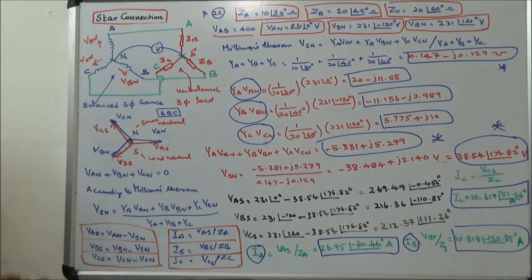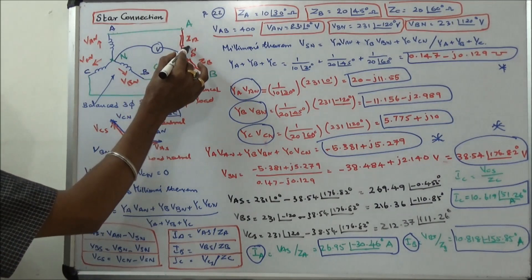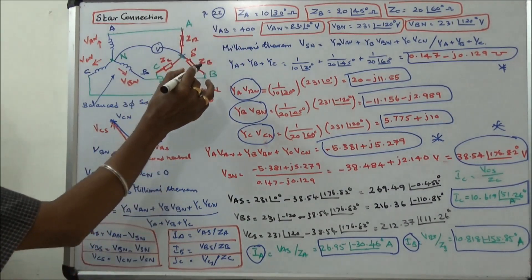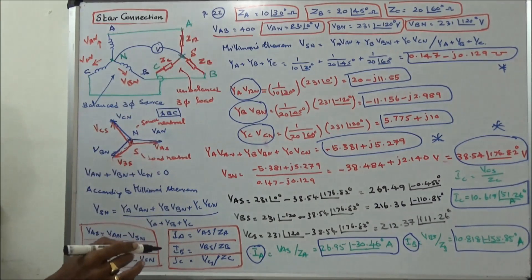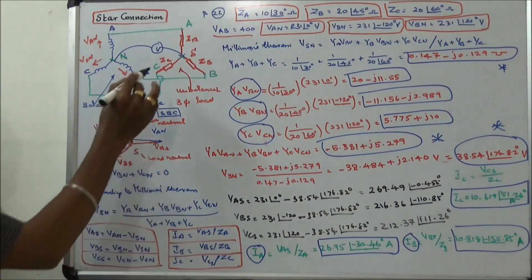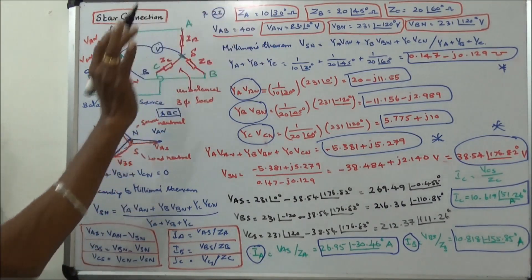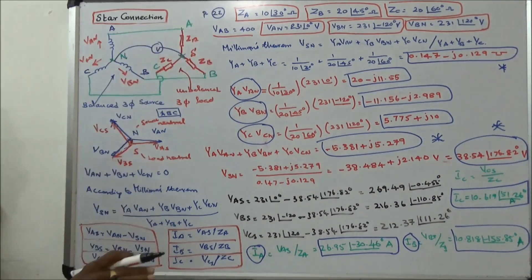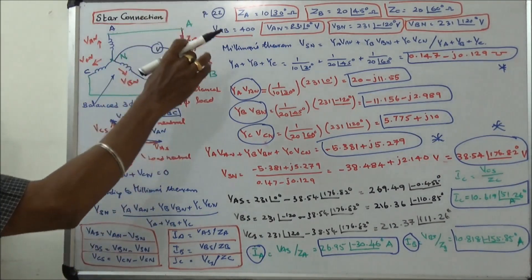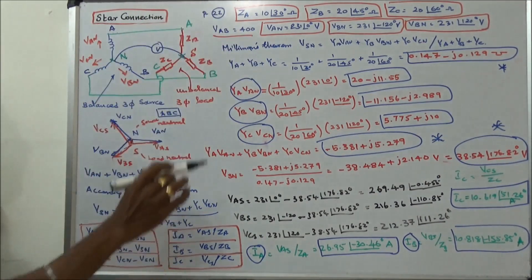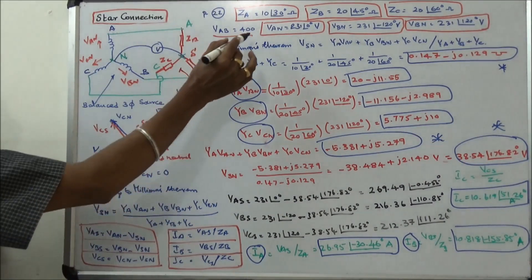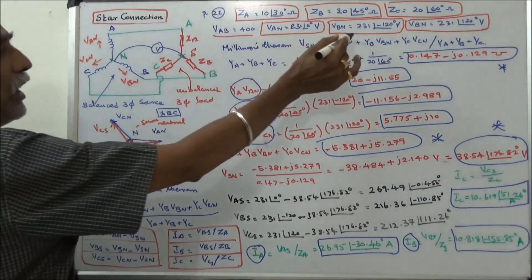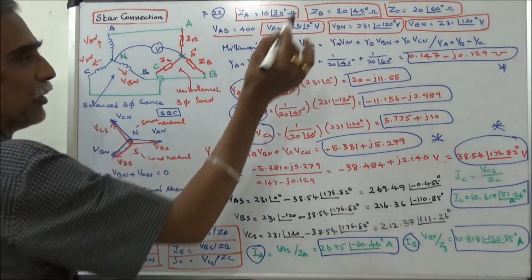Working out a numerical problem: ZA equals 10 angle 30 degrees, ZB equals 20 angle 45 degrees, ZC equals 20 angle 60 degrees. The line-to-line voltage is 400 V, so the phase voltage is 400 by root 3, giving VAN equals 231 angle 0 degrees and VBN equals 231 angle minus 120 degrees.